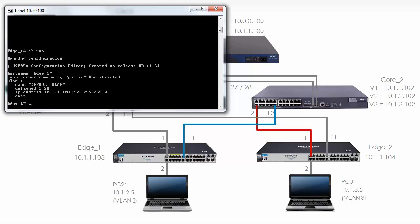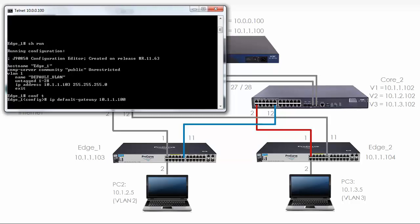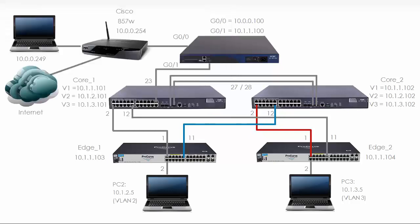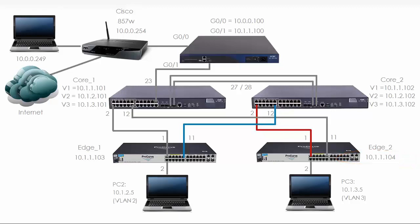Running 'show run' shows a very basic configuration: the switch has a hostname and an IP address configured on VLAN 1, and all ports are still untagged for VLAN 1. Let's set the IP default gateway to the router. The MSR is on VLAN 1 with IP address 10.1.1.100, and the management interface of both edge 1 and edge 2 is also in VLAN 1, so both switches are logically directly connected at layer 3 to the MSR.